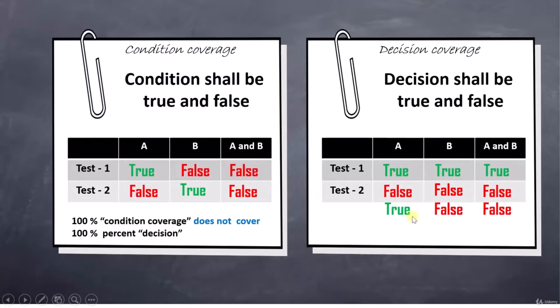But if I see the condition coverage, A is only true, A never becomes false. So that is the reason we have not covered 100% condition coverage. For B we have covered because this is true here and this is false here.